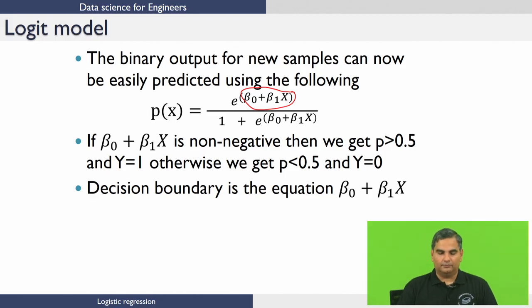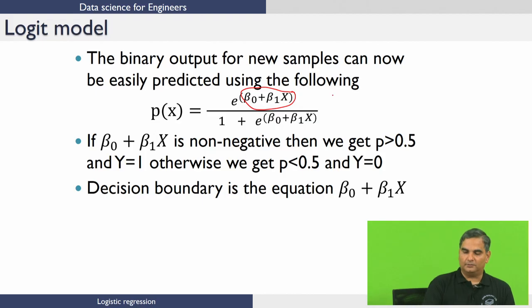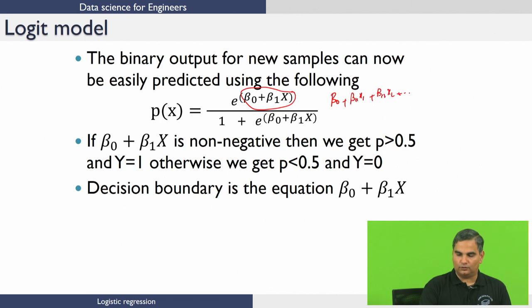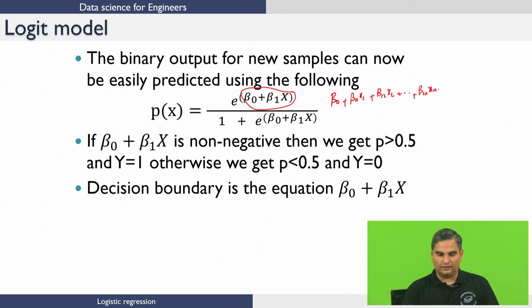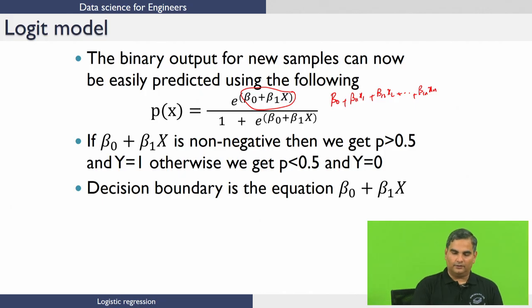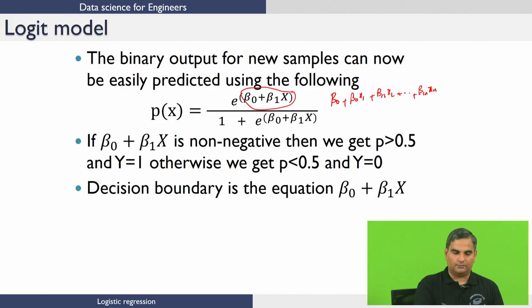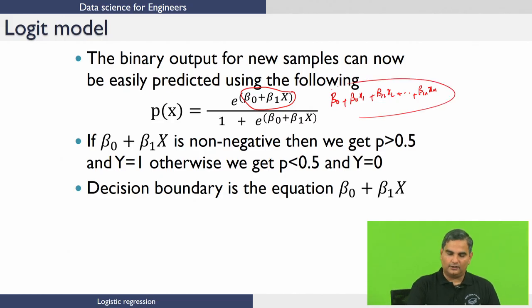This becomes something like beta naught plus beta 1-1 x1 plus beta 1-2 x2 and so on, beta 1-n x-n — so this is a scalar. If this quantity is a very large negative number, then the probability is 0. And if this quantity is a very large positive number, the probability is 1.